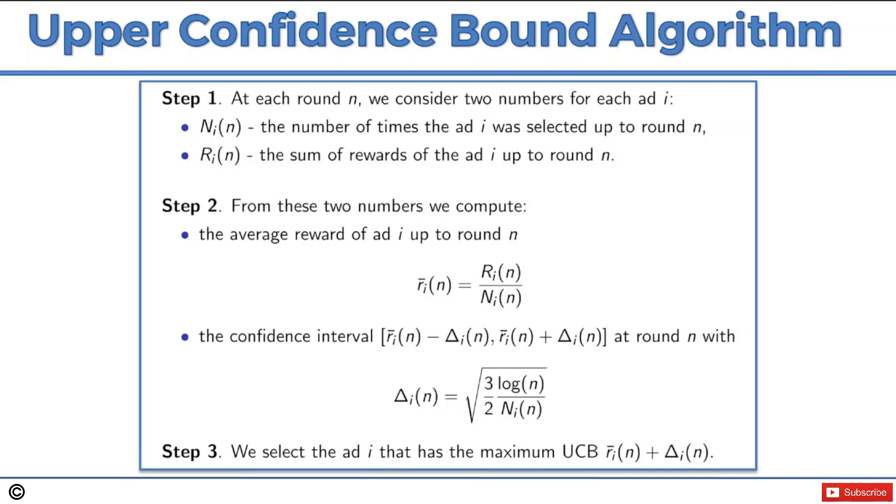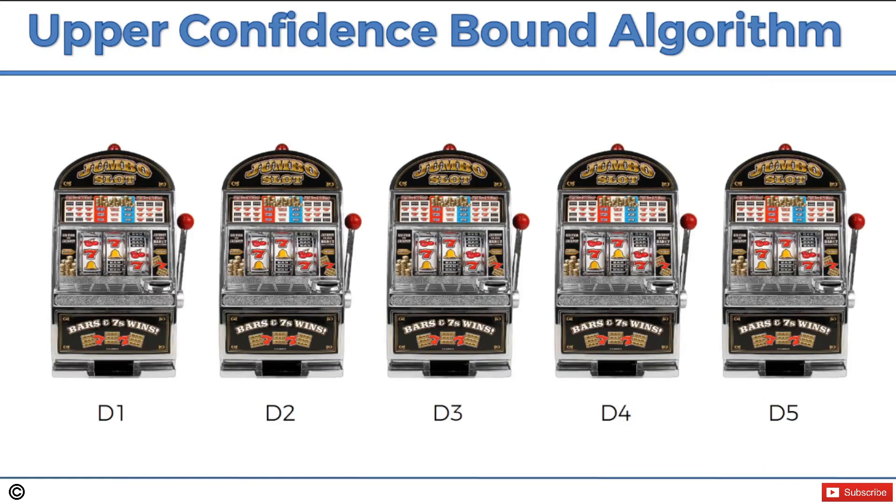This is how the upper confidence bound algorithm works. I won't go into too much detail on this because Hadlan is going to run you through this and you're going to code this from scratch in R and Python in the following lectures. We're not going to spend time on this. We're actually going to get to the essence of the algorithm. Let's get to the intuition part, which is how does it work? What's actually happening in the background when this algorithm is running?